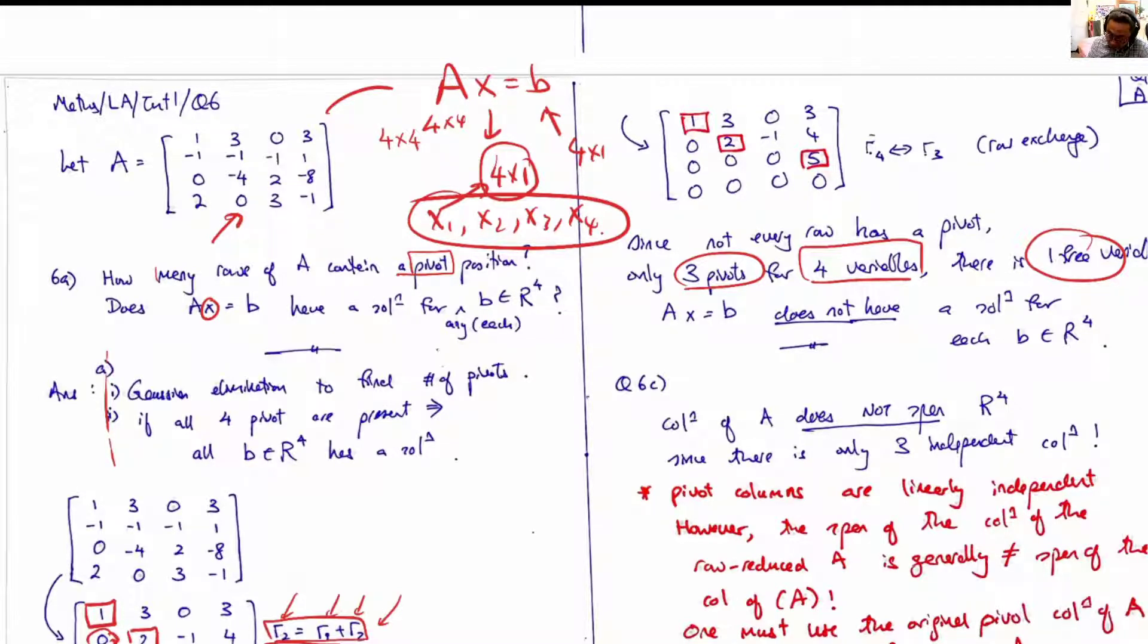Therefore, we can also say that Ax = B might not be true for any B. It will be true for some B, which is linear combinations of some of the columns, but it will not be for all B's.